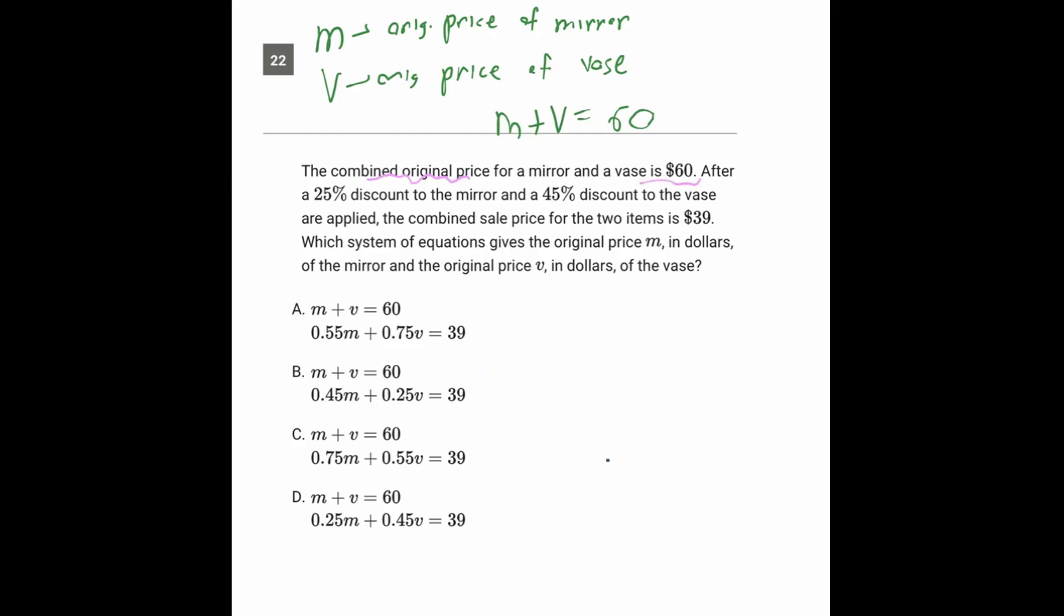So now the question is telling us that for that M for the mirror, if we discount it 25%, well, what number are we going to have here?